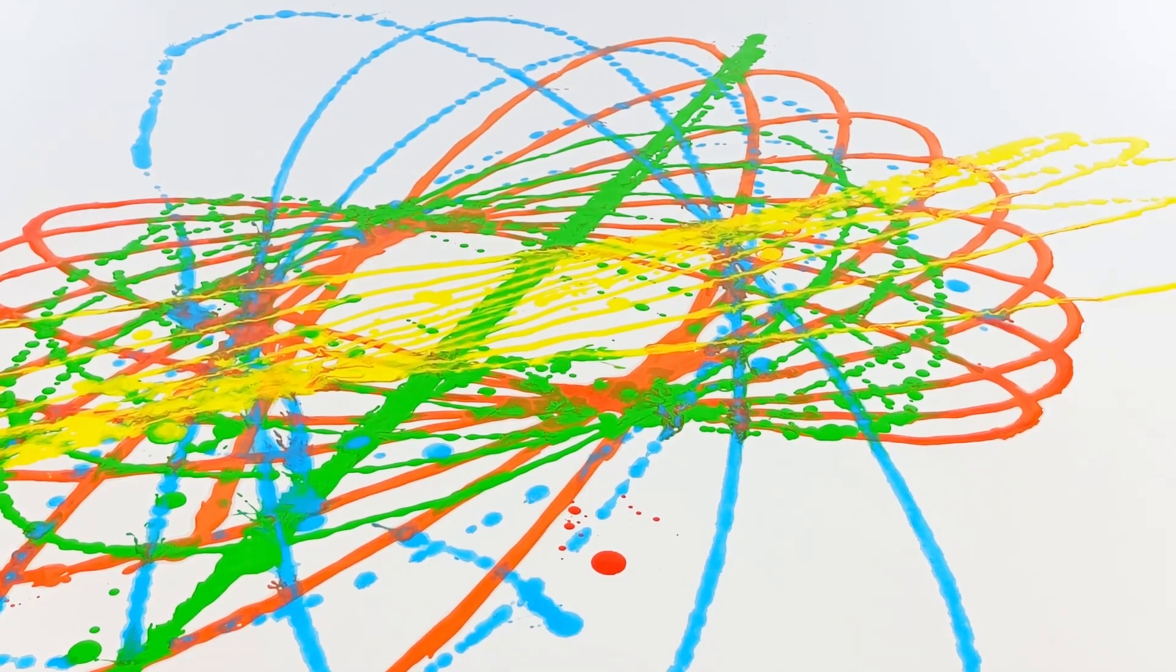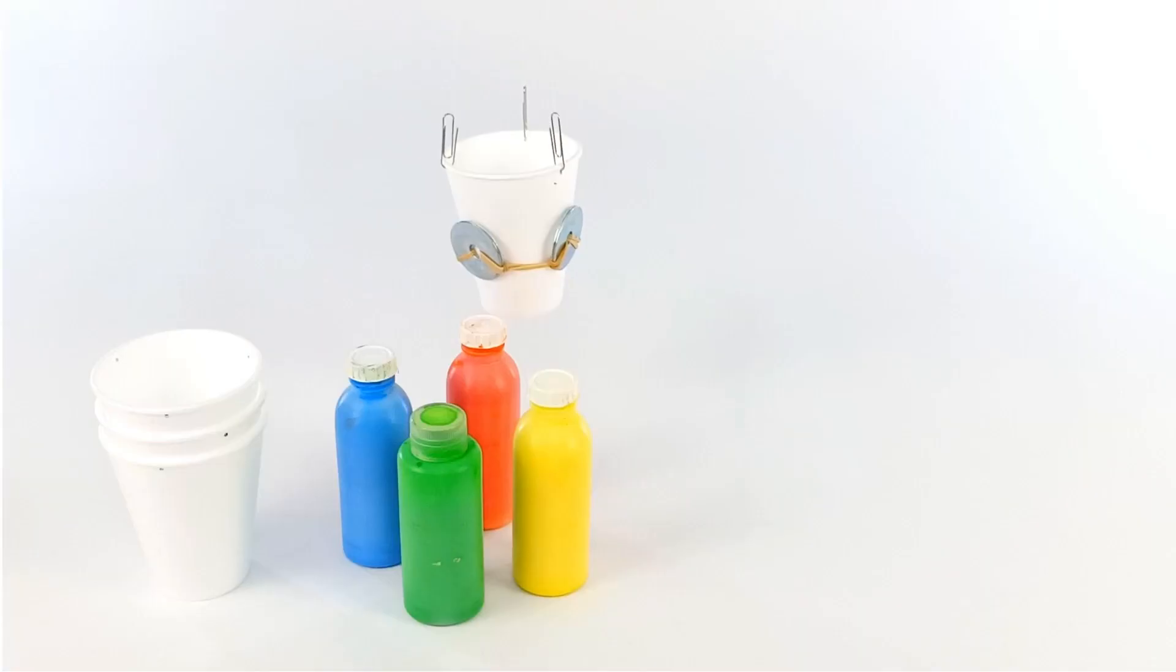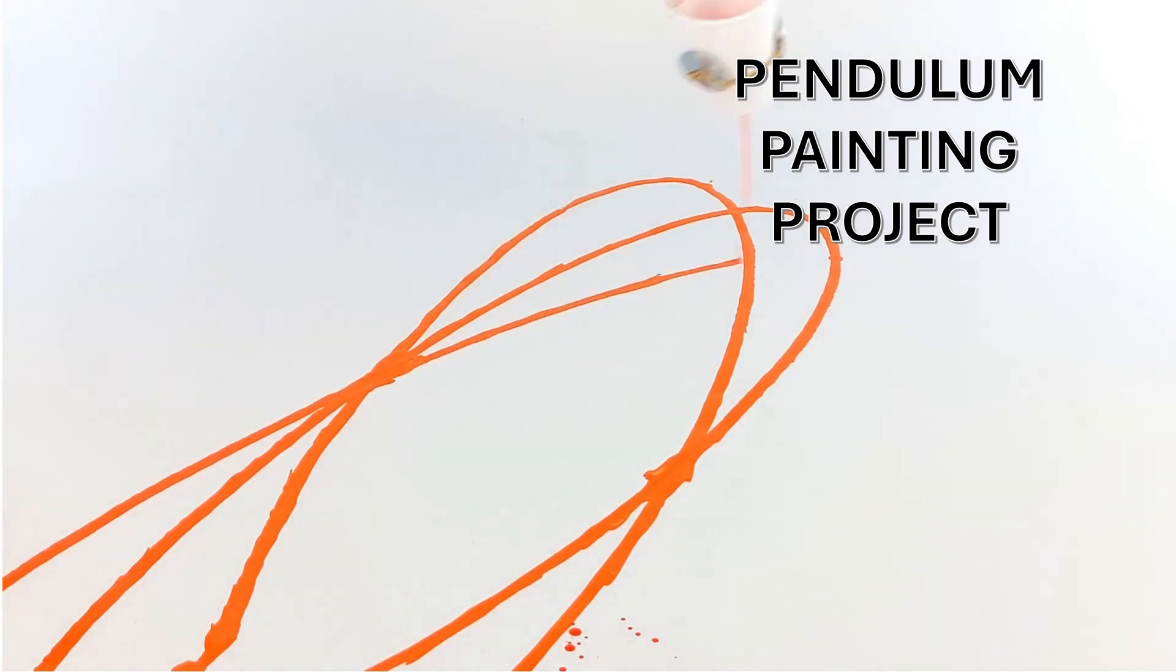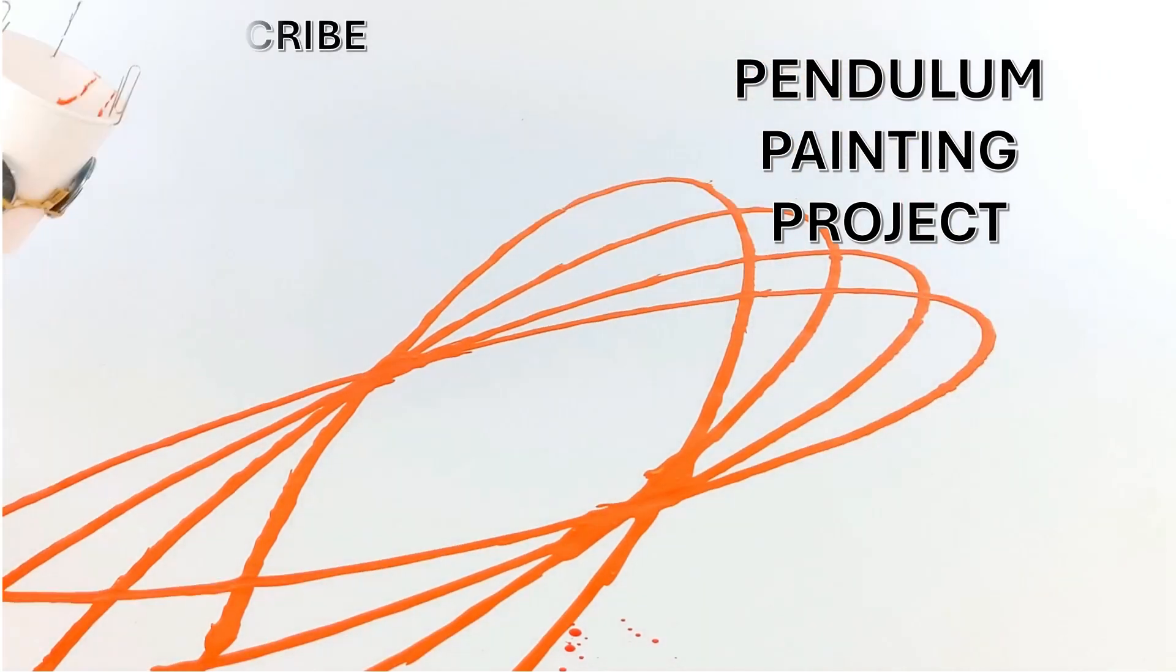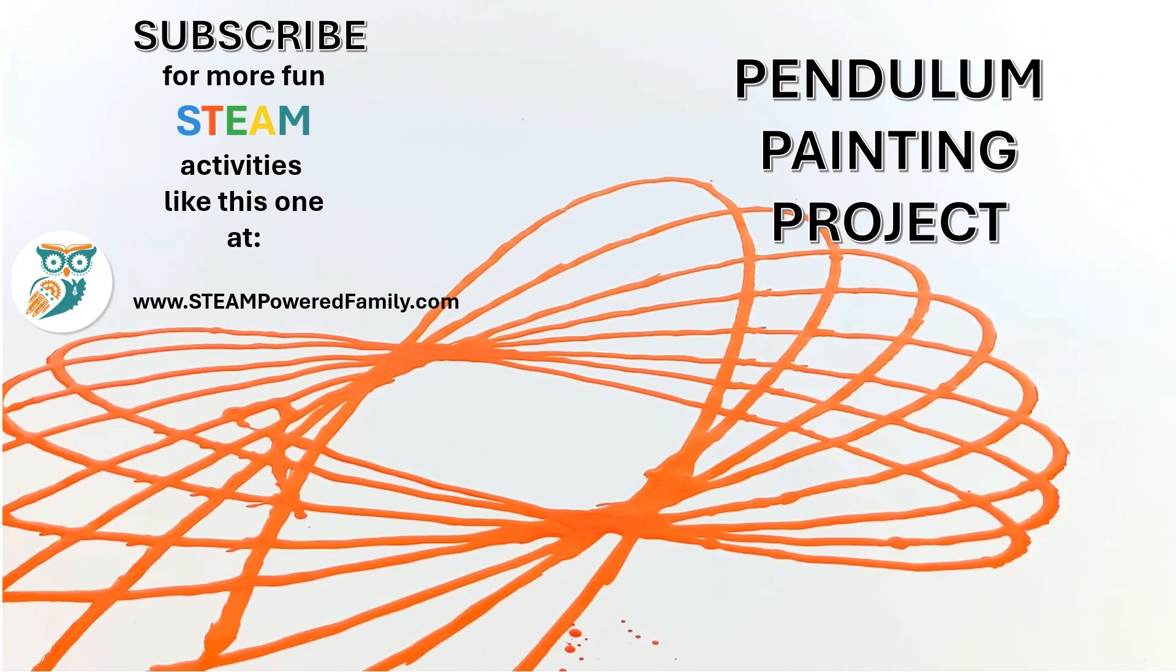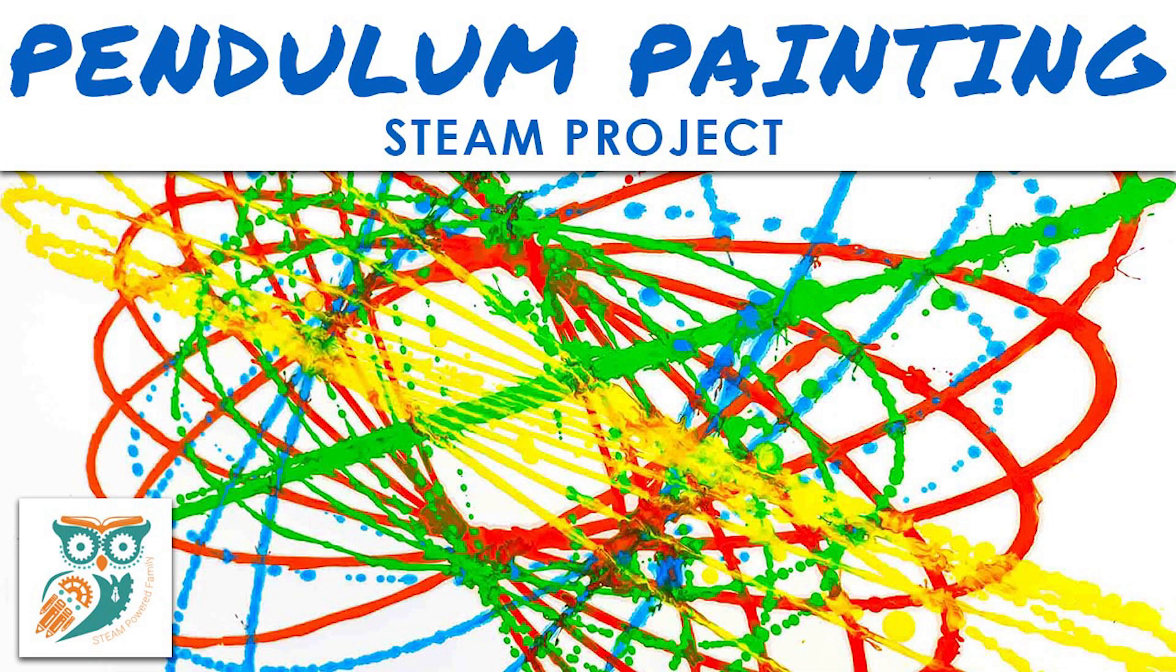You can use whatever colors you want, you can do as many layers as you want. This is a fantastic way to bring some art to your STEM lessons, learn a little bit about physics as well as engineering, a bit of math and of course making beautiful art. If you want to learn more about the science behind this activity and more detailed step-by-step directions please visit steampoweredfamily.com where you'll find this and many more STEM activities. Have a great day. Bye for now.